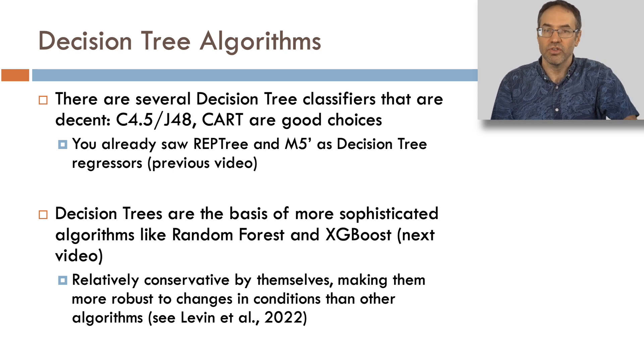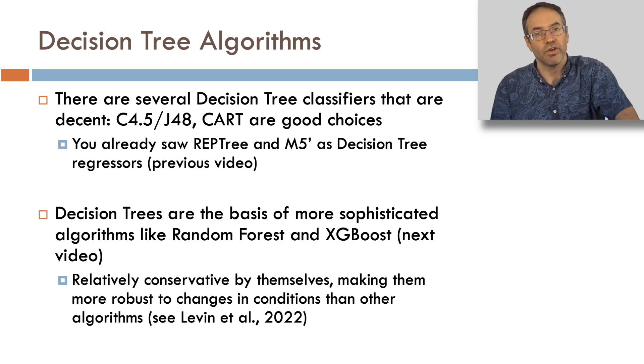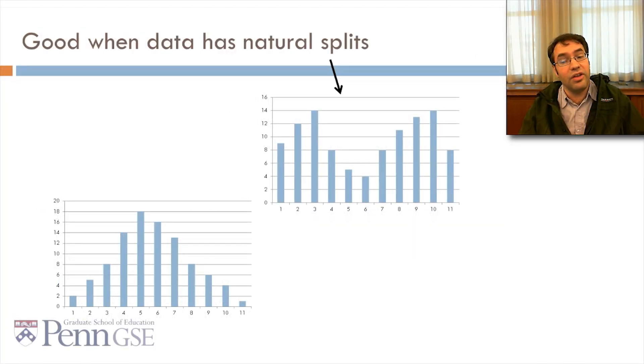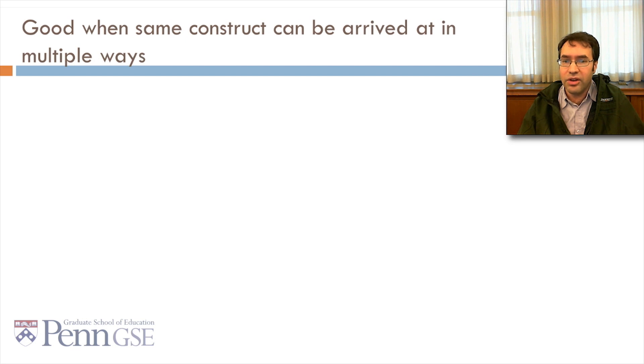Levin et al. 2022, for example, showed that a decision tree built on data from 2008 actually still worked on data from over a decade later, whereas other more advanced algorithms, such as random forests, XGBoost, and neural networks, no longer work very well. It's good when the data has natural splits, like you see in this graph here where there's kind of a bimodal, and so there's a natural split in the data. It's also good when multi-level interactions are common.